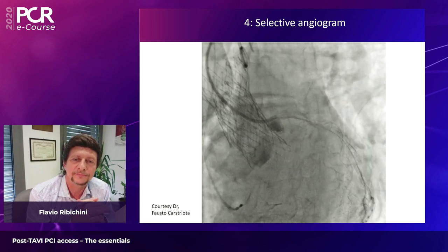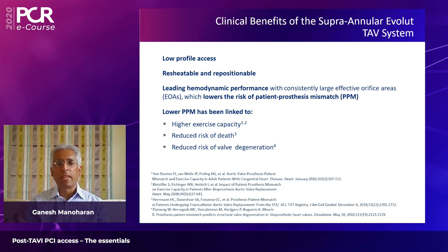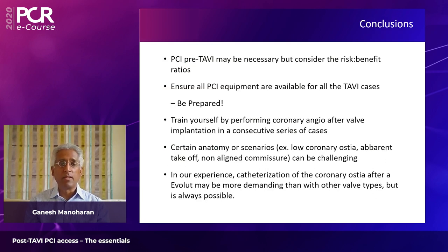To conclude: Flavio's cases demonstrate that even with difficult anatomies, you can comfortably gain coronary access with experience. When considering valve choice, it's important to balance the potential need for future coronary access against the clear benefits of the Evolute supra-annular technology — its low profile, repositionability, world-leading hemodynamic performance, very low pacemaker implantation rate, and nearly eight years of clinical data. It's a balance between what is clearly beneficial now versus what could potentially be needed later.